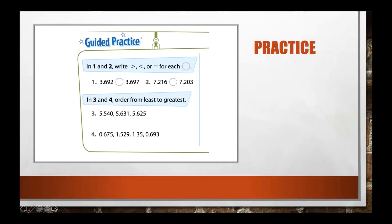Our first number is three and six hundred ninety-two thousandths. The circle is where we'll put our symbol once we decide what it will be. Our second number is three and six hundred ninety-seven thousandths. Lining them up: three, six, nine, two versus three, six, nine, seven. The threes are the same, sixes are the same, nines are the same. Now we have two and seven. The bigger side of the symbol always faces the bigger number, so the symbol indicates that the number with seven is larger.